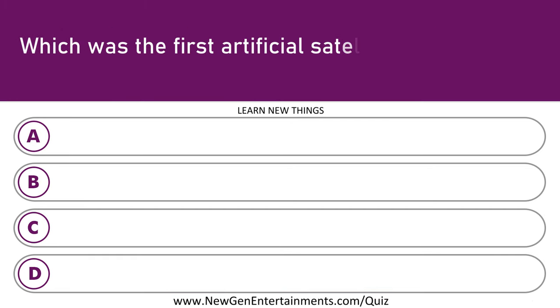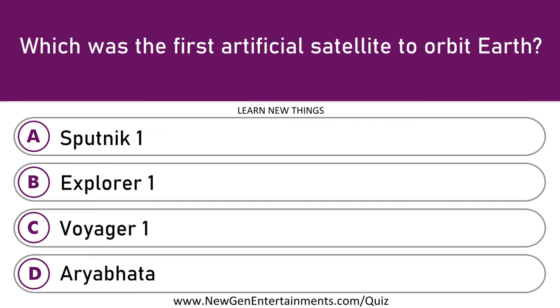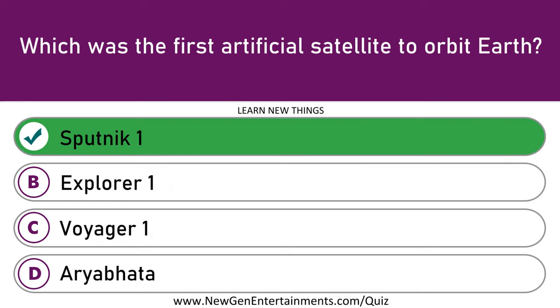Which was the first artificial satellite to orbit Earth? Sputnik 1.